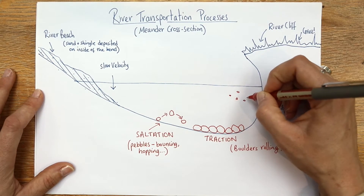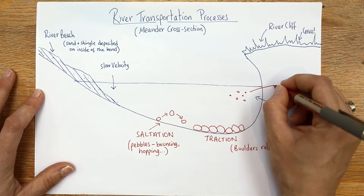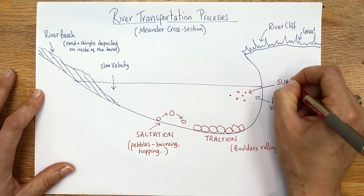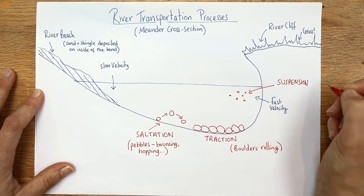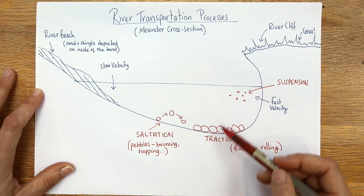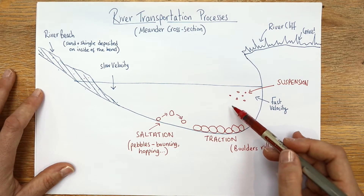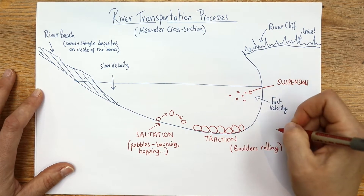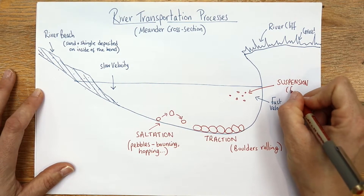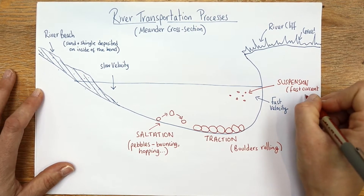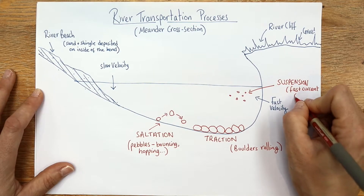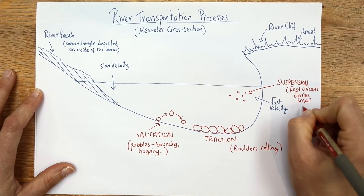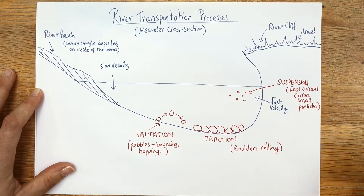When particles get smaller again, you can see that they're higher up in the water - that's because they're in something called suspension. Suspension is where the current - remember it's faster on the outside of the bend - is strong enough to actually carry the small particles in the water. It's a bit like being in a lazy river at Center Parcs, getting carried along by the flow. So the fast current carries small particles, and it depends on the flow as to how small those are.